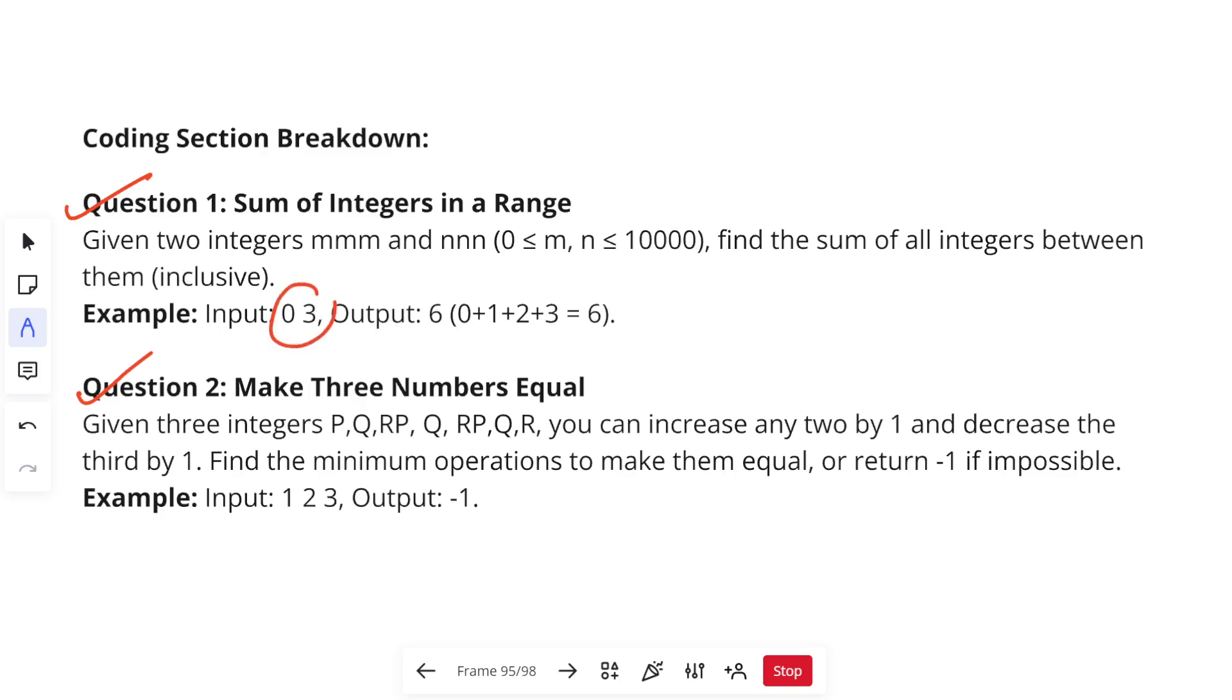The first question was based on sum of integers in a range. Basically, you were given the input in this way: two numbers were there, this is basically your range. When we say 0 and 3, all the digits between 0 to 3 including 0 and 3 will be taken: 0, 1, 2, 3, and you need to sum up all the digits like 0 plus 1 plus 2 plus 3, and then your answer will be 6. In the solution video I have already taught you the optimal approach and the basic approach both. Make sure to check it.